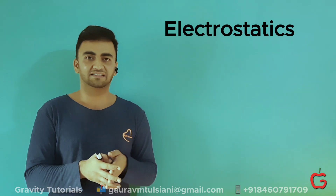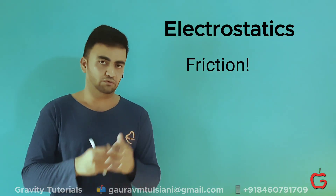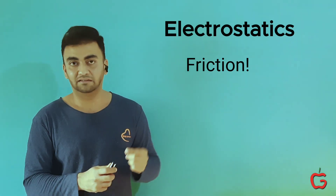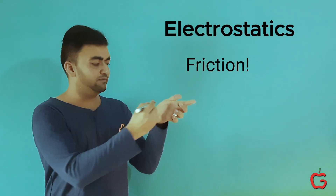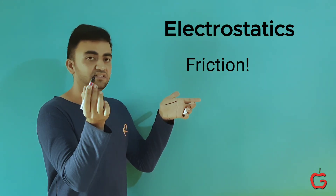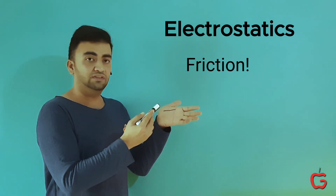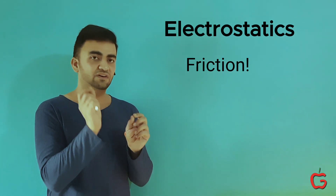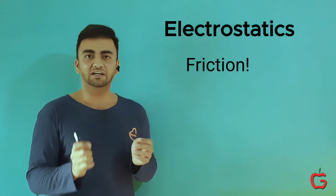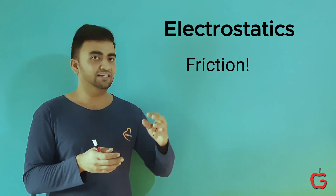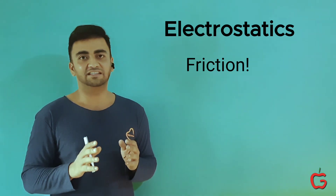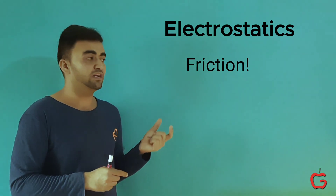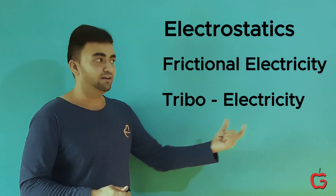What does friction do to objects that they start attracting each other? The answer is that friction causes a transfer of matter. Like this pen, when rubbed with a hand, it transfers some of its ink to the hand. Even in small cases, when two things rub, they transfer particles — they transfer matter. This matter is nothing but electrons. The object that gains electrons becomes negatively charged, and the object that loses electrons becomes positively charged. So friction does a transfer of charges and produces a kind of electricity, hence called frictional electricity.